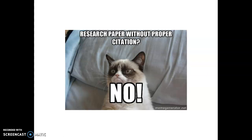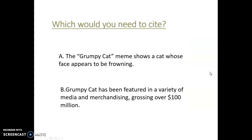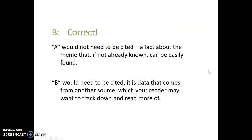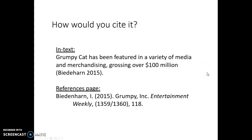Now we're going to do a short quiz to show what you would want to cite versus not cite — it's grumpy cat themed, rest in peace. Out of two sentences, which one would you need to cite? The answer is B — it is data that comes from another source and your reader may want to find that source and read more about it. A wouldn't need to be cited because it's a fact that could be easily found. Then this is how you would cite it in the text and on the references page.